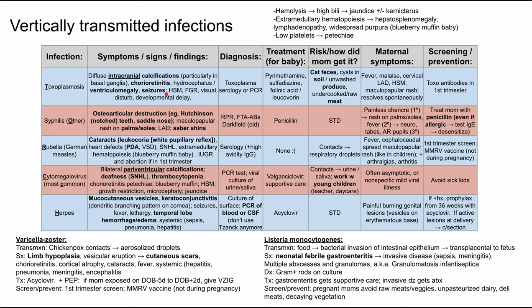Babies might also have seizures, hepatosplenomegaly, visual disturbances because of the chorioretinitis, fetal growth restriction, and developmental delay. The diagnosis for congenital toxoplasmosis can be made with a toxo serology or PCR.